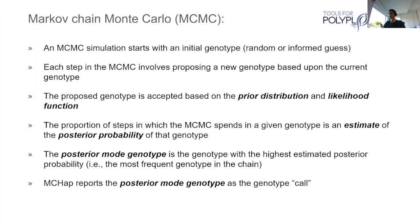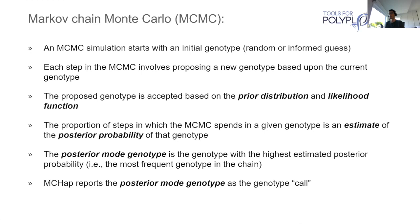The proposed genotype is either accepted or rejected based on the combination of the prior distribution and a likelihood function. The likelihood function is where we include the read data — our observations. The prior distribution can incorporate information we already know about that sample, such as the inbreeding coefficient or the population allele frequencies. The proportion of steps in which the chain spends in a given genotype is an estimate of the posterior probability of that genotype. The posterior mode genotype — the most frequent genotype within the chain — is what MCHAP by default reports in the output VCF file.